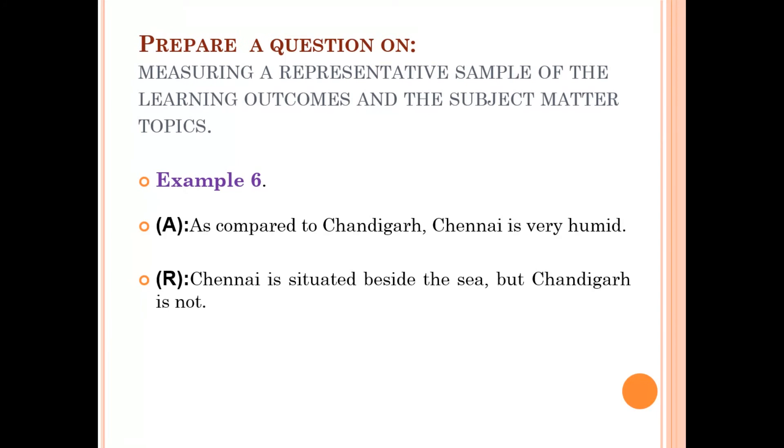Measuring a representative sample of the learning outcomes and the subject matter topics. This is the sixth example. As compared to Chennai, Chandigarh is very humid. Reason: Chennai is situated beside the sea but Chandigarh is not. So here, what will be the outcomes that we expect by framing such questions?